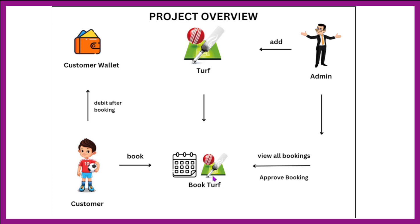Initially the booking status will be pending. Admin can see all bookings by customers and approve them. As soon as admin clicks the approve button, the amount for the booking will get debited from the customer's wallet, and the booking gets confirmed. The customer can then go to the turf on that day at the selected time slot.